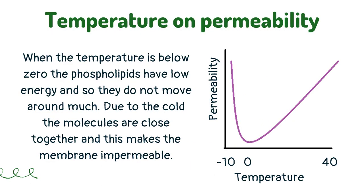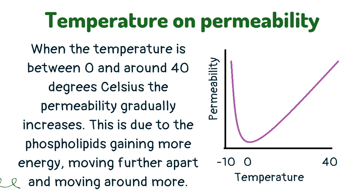When the temperature is below zero, the phospholipids have low energy and so they do not move around much. Due to the cold, the molecules are close together and this makes the membrane impermeable. However, the cold can affect the channel and carrier proteins, allowing ions and molecules to move into the membrane. It should also be noted that at low temperatures ice crystals can form in the membrane, and this can cause holes that will cause a large increase in permeability when the temperature rises.